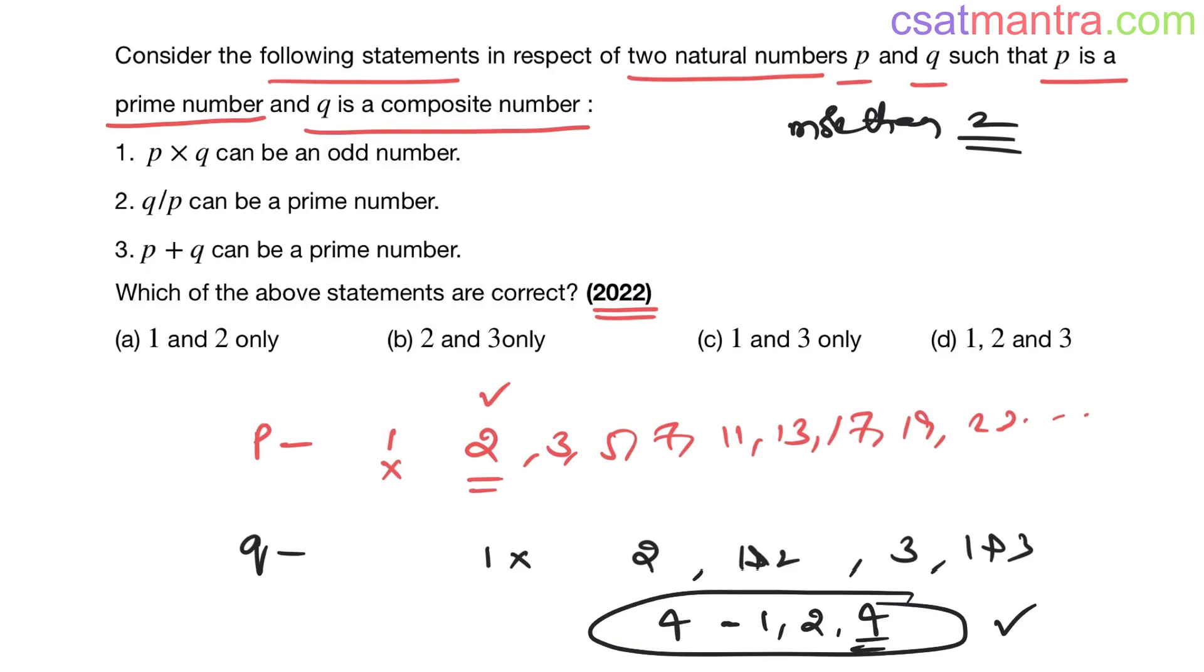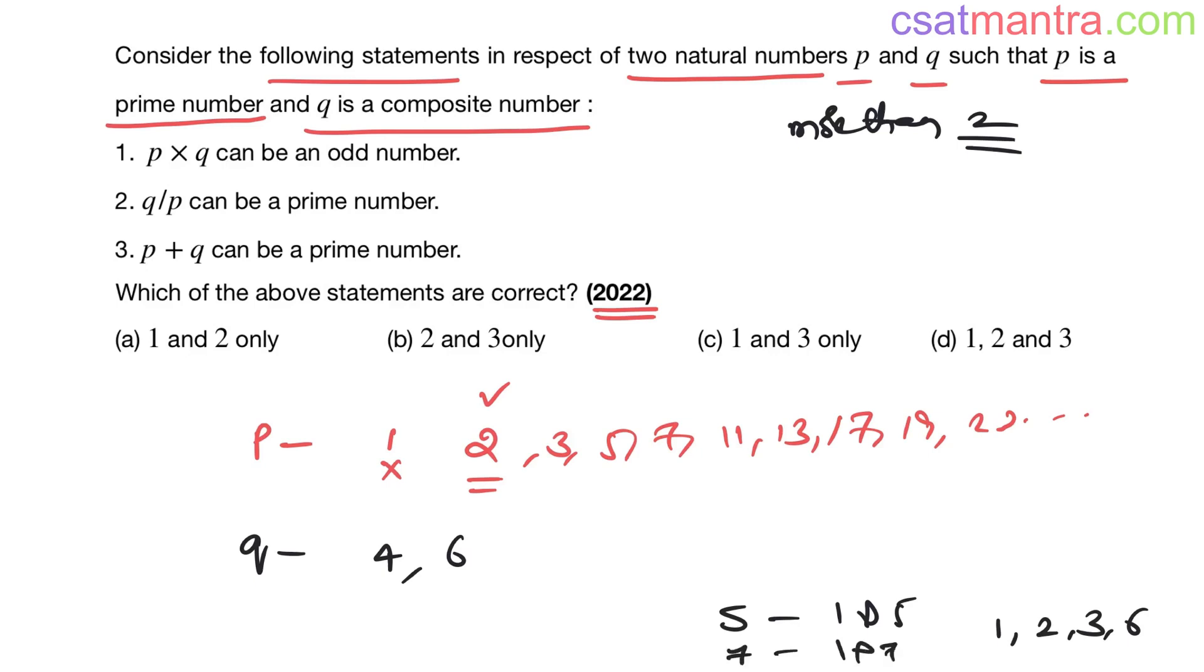Four is a composite number. Five has one and five only. Six has one, two, three and six, so six is composite. Seven, one and seven only. Eight: one, two, four, eight, yes. Nine: one, three, nine, yes. Ten: one, two, five, yes.